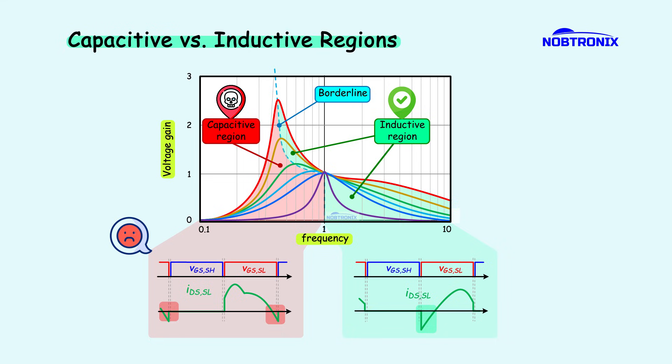Also, the primary side MOSFETs undergo hard switching, causing significant reverse recovery loss due to slow body diodes. This can result in shoot-through, high current spikes, and increased EMI noise, ultimately leading to potential MOSFET failure. Therefore, the inductive region is the safe operation area where soft switching is maintained.